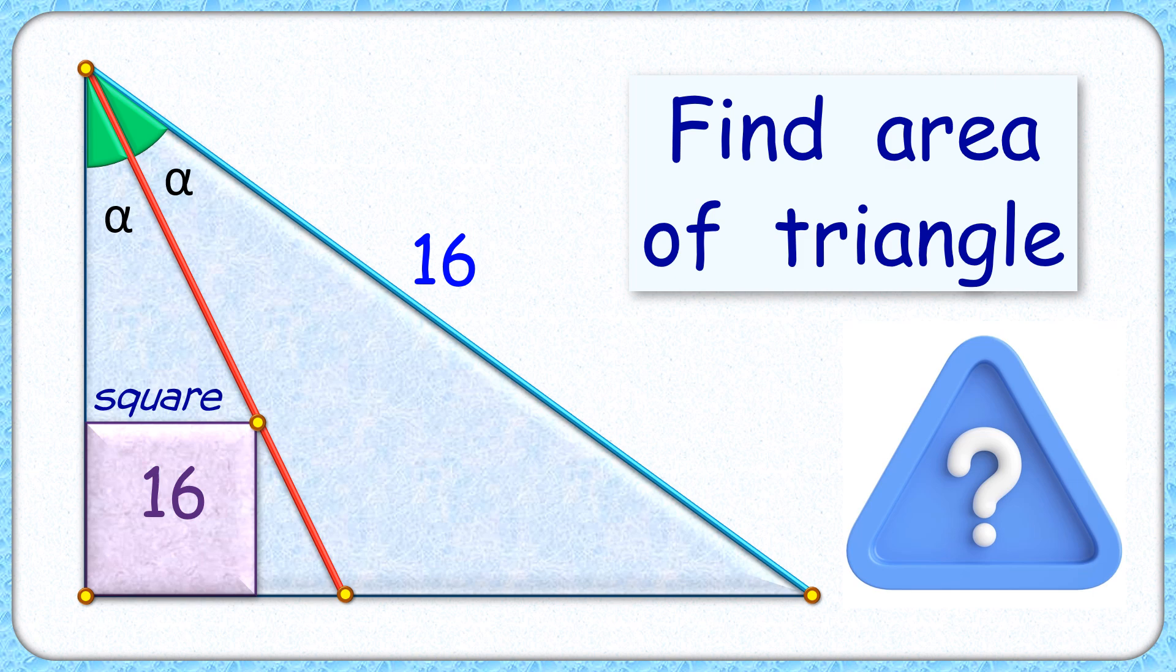In this interesting question, we have a right angle triangle with hypotenuse length as 16 centimeters. This red line segment is the angular bisector, and this figure is a square with area 16 centimeter square. The exciting part is with this limited data we have to find the area of the triangle.